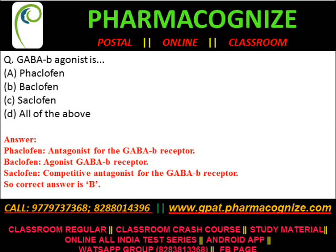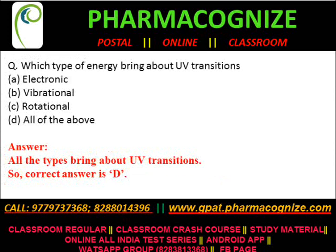Fourth question: which of the following is a GABA-B agonist? Options: A) phaclofen, B) baclofen, C) cyclophane, D) all of the above. Phaclofen is an antagonist for the GABA-B receptor, baclofen is an agonist for GABA-B receptor, and cyclophane is an antagonist for GABA-B receptor. So the correct answer is baclofen.